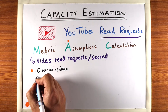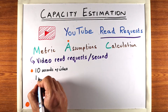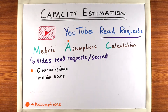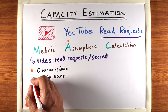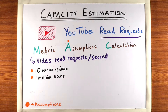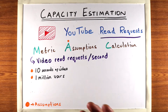Another assumption is that we have 1 million users. Again, this is a small number — the actual YouTube has far more users — but we're keeping it simple. Otherwise, if you use a number like a hundred billion, you're going to have to deal with much larger numbers. You can clarify this choice to the interviewer.